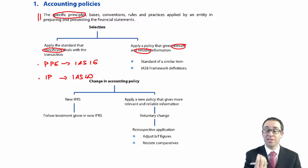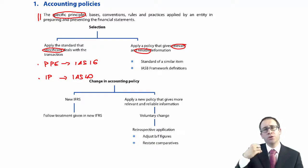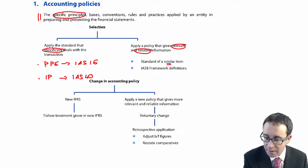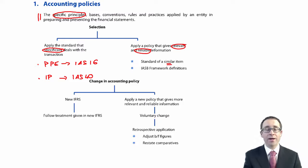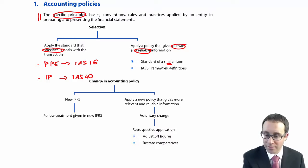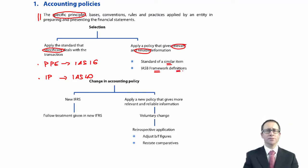IAS 8 specifically tells you how to select an accounting policy using the principles from the framework to help you. You should take a similar item in terms of a framework, and if there is no accounting standard for a similar item, then go back to the framework definitions.